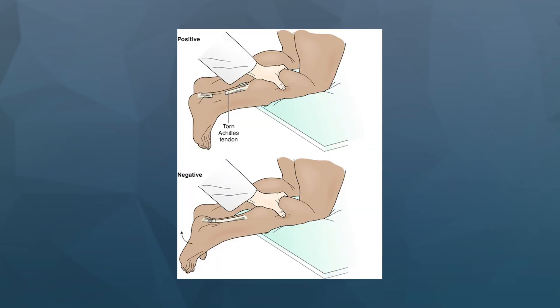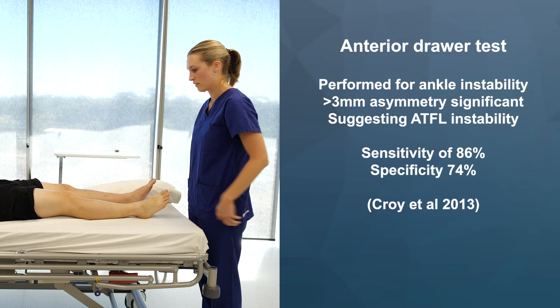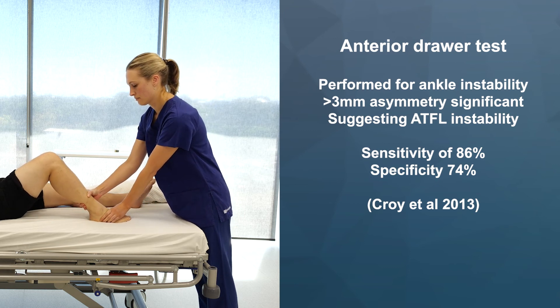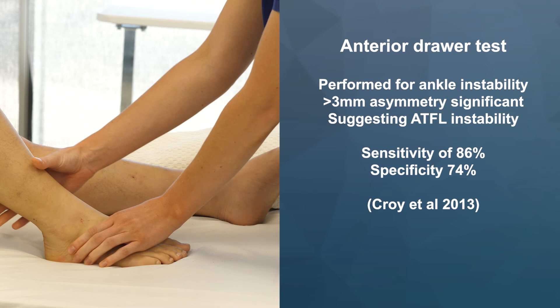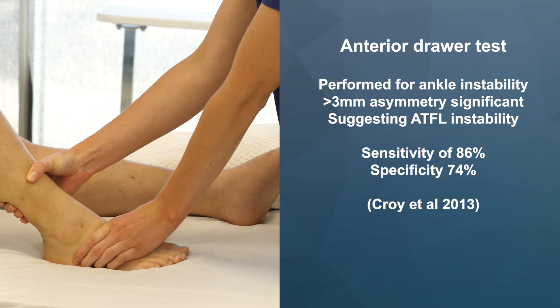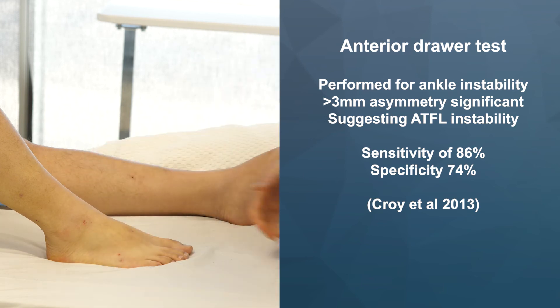Now to special tests. It should be noted that special tests should always be done with discretion. For example, the Achilles squeeze test should only be performed with the correct history of trauma and noticeable tenderness on posterior palpation, with inability to move the ankle. For the anterior drawer test, with the patient supine, flex the knee up to around 90 degrees and the ankle in 10 degrees plantarflexion. Stabilise the midfoot and hindfoot with one hand and with the other, grasp the distal tibia and translate forwards and backwards — greater than three millimetres asymmetry is abnormal, suggesting ATFL instability.